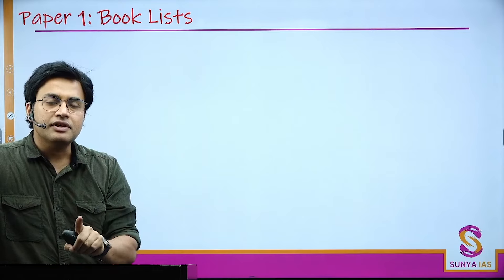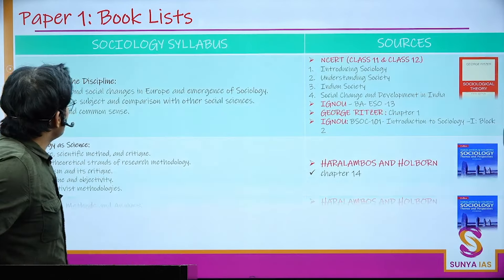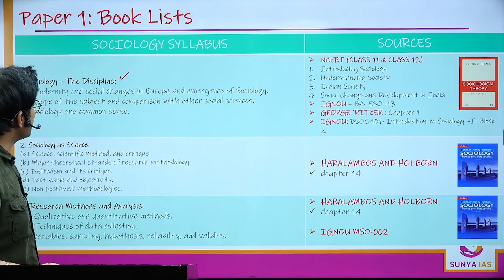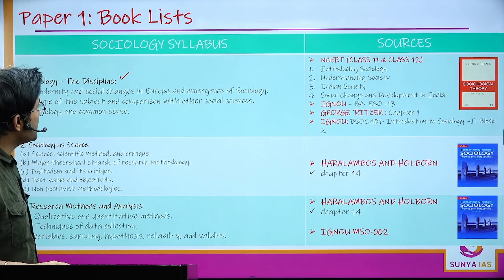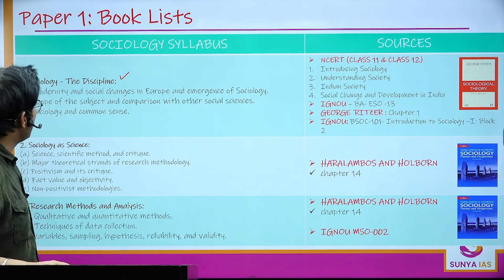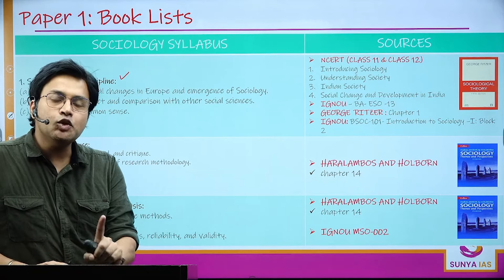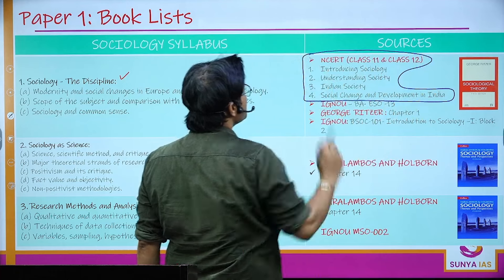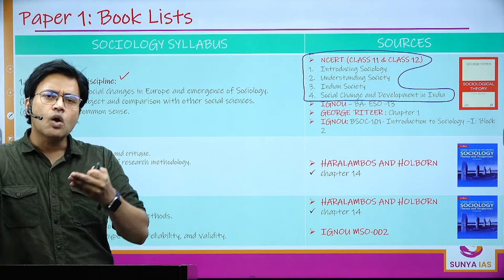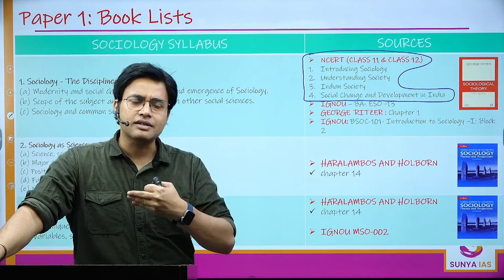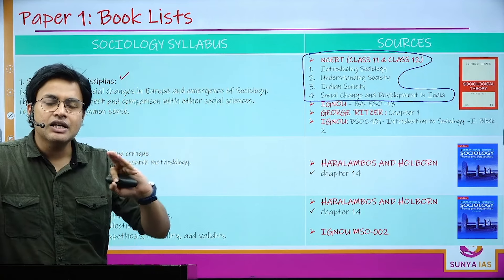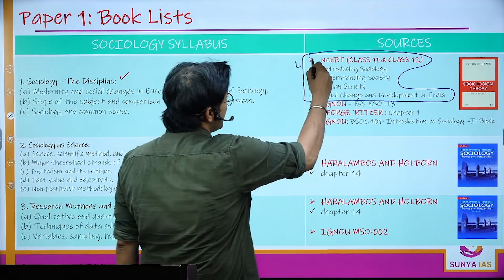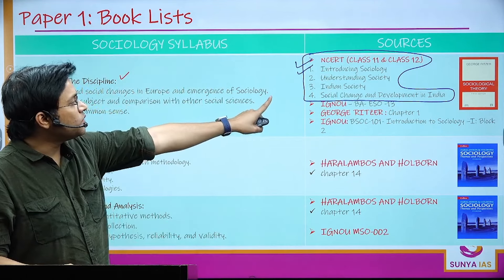We'll look into various books for both Paper 1 and Paper 2. Starting with Paper 1, the very first sub-unit is 'Sociology: The Discipline,' covering modernity and social changes in Europe, emergence of sociology, scope of the subject, comparison with other social sciences, and sociology and common sense. Always start with NCERTs because you'll come across terminologies like social institution, society, culture, poverty, and thinkers like Karl Marx, Max Weber, and Emile Durkheim, helping you develop a sociological perspective.